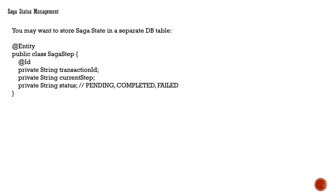For state management, there will be a Saga state maintained in a database table — a separate DB table where you can track the transaction ID, current step, current status, and other details. You can create an entity around it and manage the request status and Saga steps. The status can be pending, completed, or failure — three simple steps.